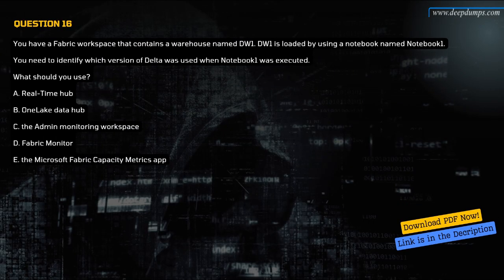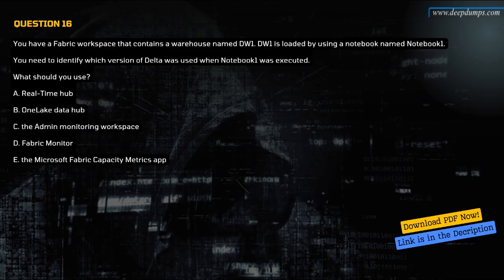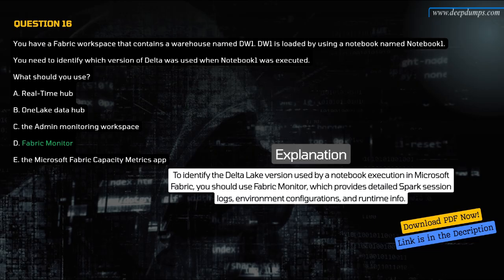Question 16. You have a Fabric workspace that contains a warehouse named DW1. DW1 is loaded by using a notebook named Notebook1. You need to identify which version of Delta was used when Notebook1 was executed. What should you use? A. Real-time hub. B. OneLake data hub. C. The admin monitoring workspace. D. Fabric Monitor. E. The Microsoft Fabric Capacity Metrics app. The correct answer is D. Fabric Monitor. To identify the Delta Lake version used by a notebook execution in Microsoft Fabric, you should use Fabric Monitor, which provides detailed Spark session logs, environment configurations, and runtime info.